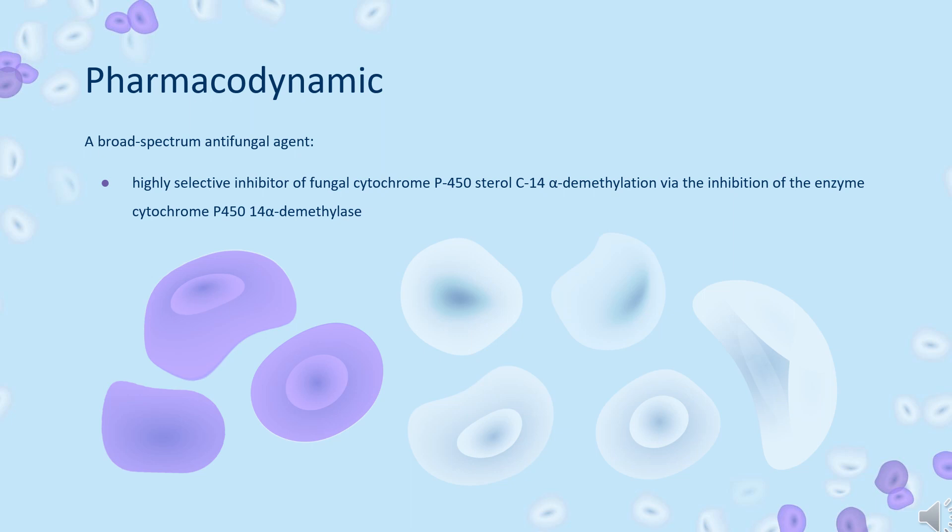Pharmacodynamics: Itraconazole is an imidazole/triazole-type antifungal agent. It is a highly selective inhibitor of fungal cytochrome P450 sterol C14-alpha-demethylation via inhibition of the enzyme cytochrome P450 14-alpha-demethylase. This enzyme converts lanosterol to ergosterol and is required in fungal cell wall synthesis. The subsequent loss of normal sterols correlates with the accumulation of 14-alpha-methylsterols in fungi, which may be partly responsible for the fungistatic activity of itraconazole. Mammalian cell demethylation is much less sensitive to itraconazole inhibition.